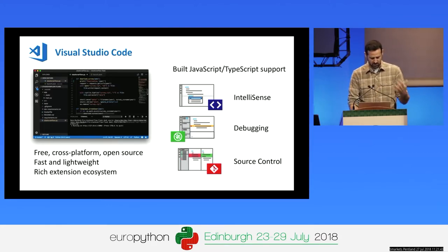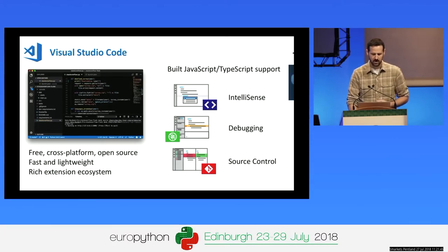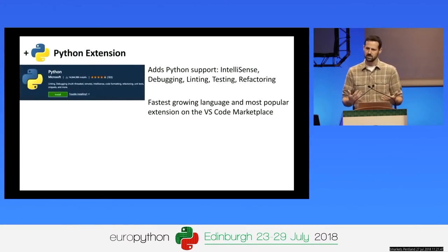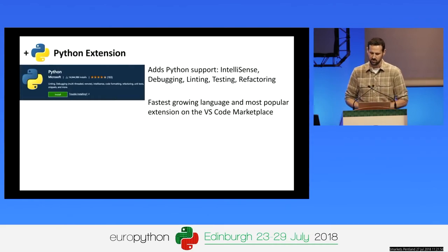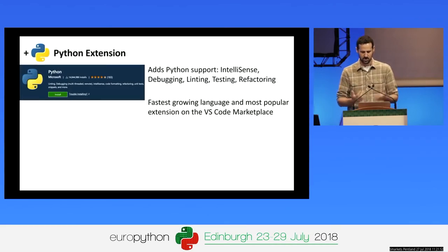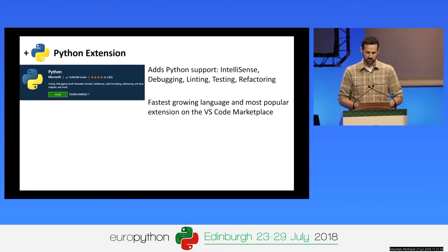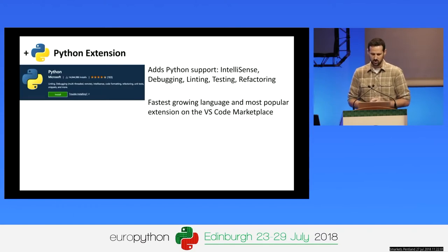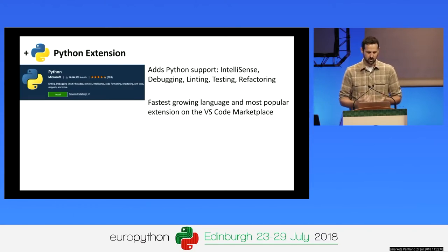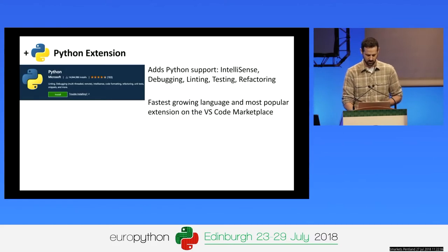The extension my team builds is the Python extension. With the Python extension, you get those same rich capabilities: IntelliSense, debugging, linting, testing, and refactoring. Because of the work we're doing, Python is actually the fastest-growing language in Visual Studio Code and the most popular extension on the VS Code Marketplace.